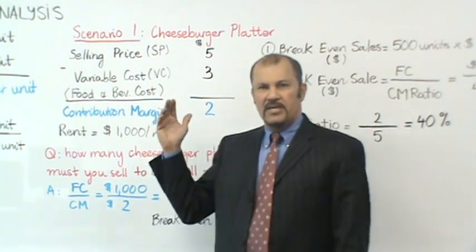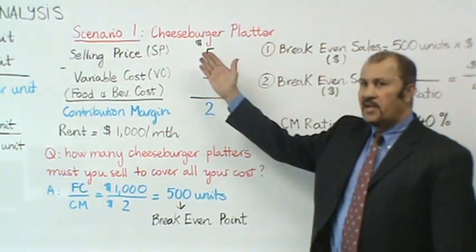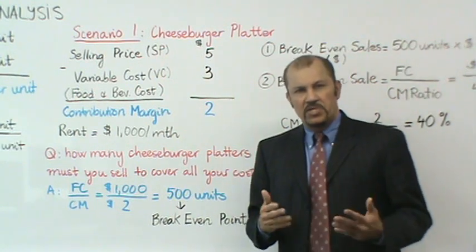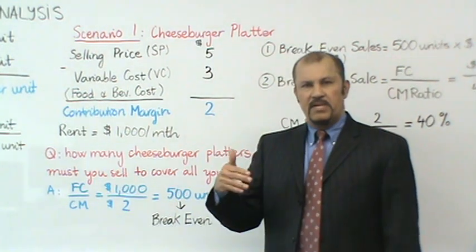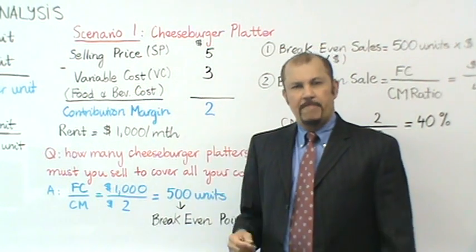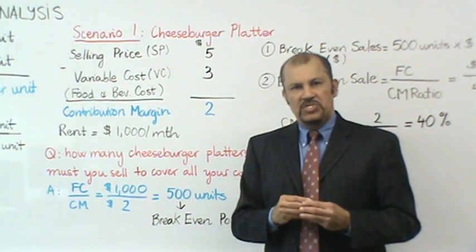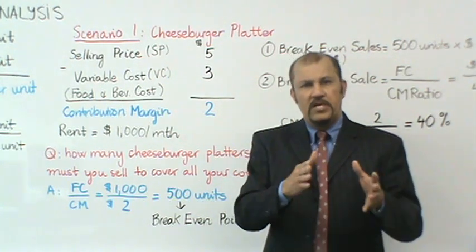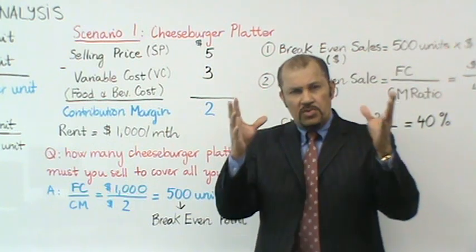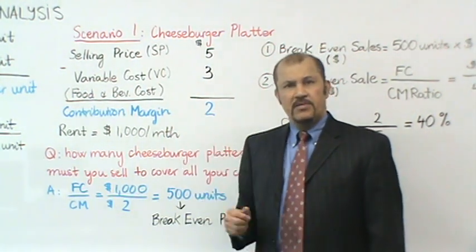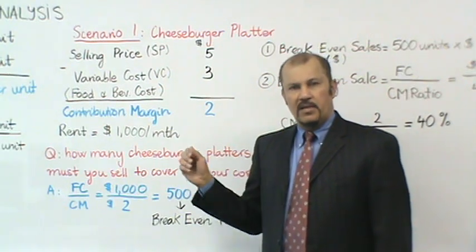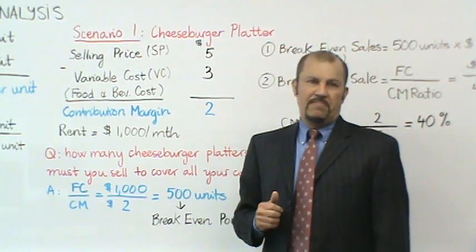After more research and scoping out the competition, I realized that five dollars per cheeseburger platter would be a pretty competitive selling price. After doing some costing on the products, on the food and beverage costs, I realized that my variable cost per cheeseburger platter will be about three dollars. What is included in these variable costs? Food and beverage costs - cheeseburger, french fries, and a soft drink. The cost of these three items combined I've costed to be around three dollars. So my contribution margin per cheeseburger platter would be two dollars.